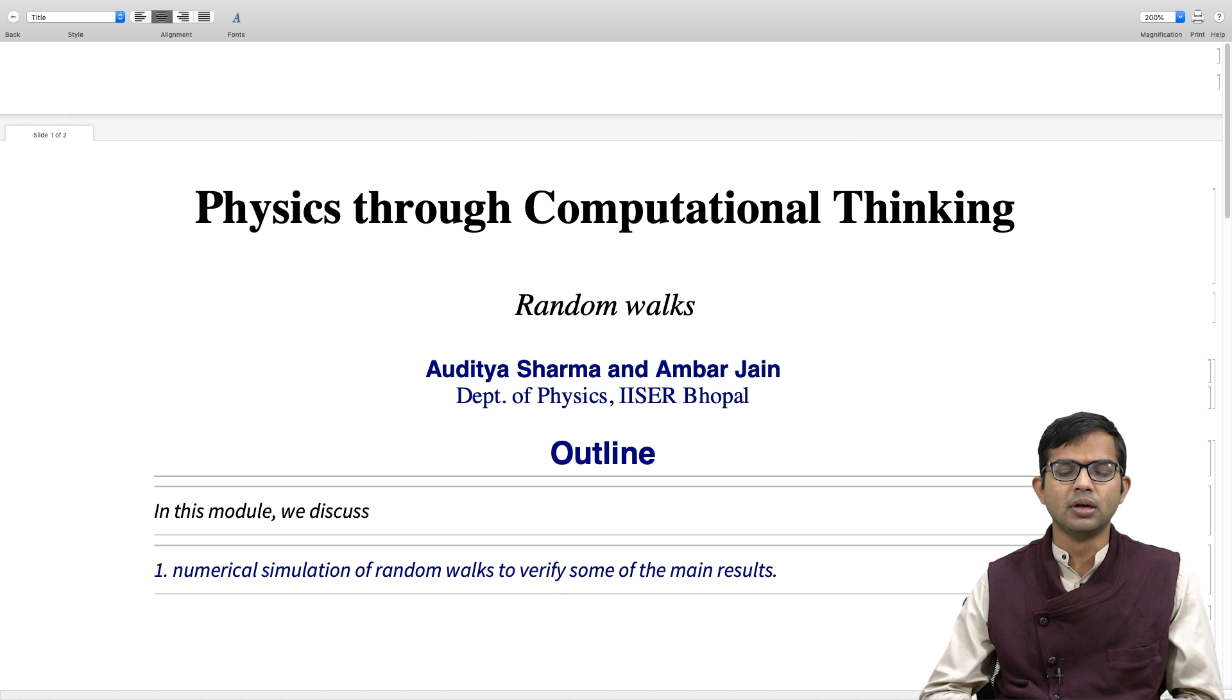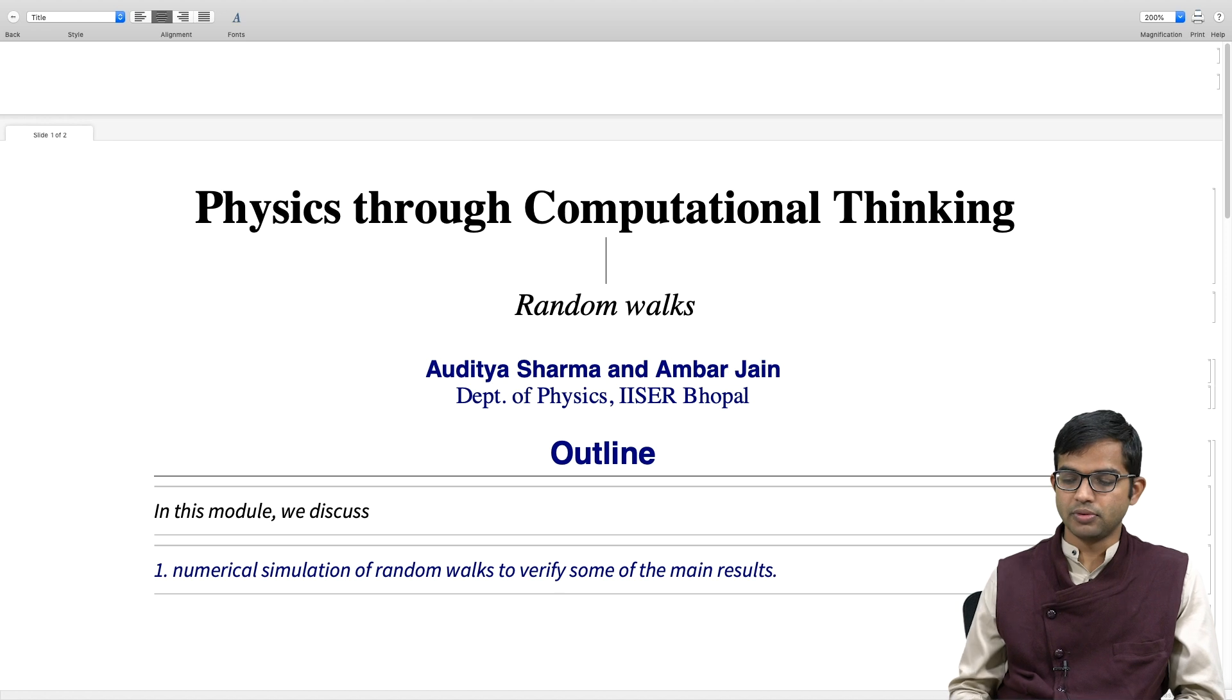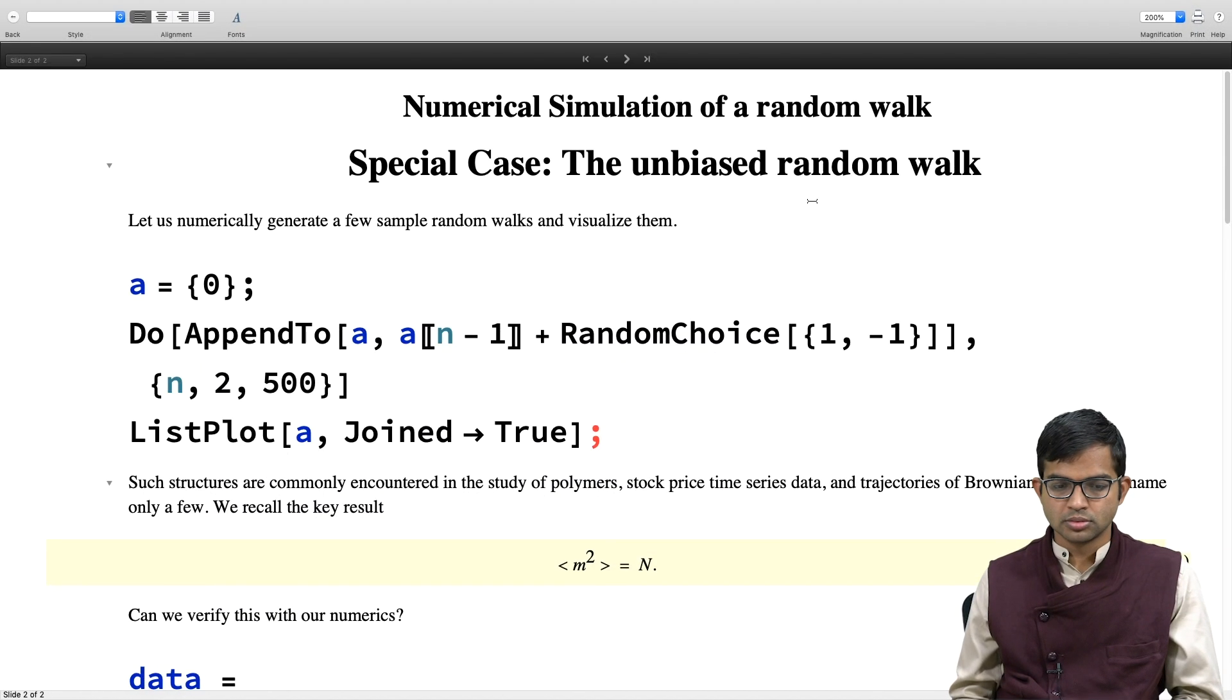What is the main result from the random walk discussion? The typical distance covered by a random walker in 1D is like square root of n. We will verify this systematically numerically now. Let us first consider the unbiased random walk problem and then generalize it.